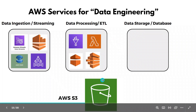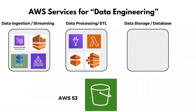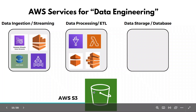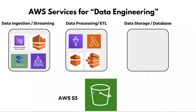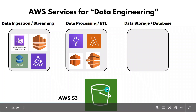The next step is data storage and databases. The first storage service is Amazon S3, which is a very robust and efficient storage service. You can store huge amounts of data in S3 as files. S3 can act as your data lake to store petabytes of data. It also offers features like Glacier for archiving infrequently accessed data at a lower cost, making S3 cost-efficient and highly available.